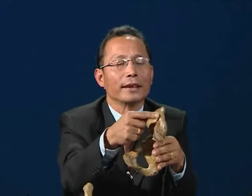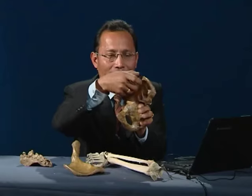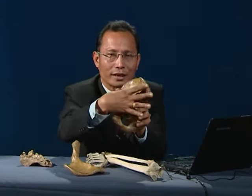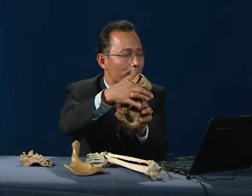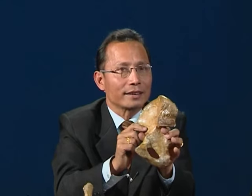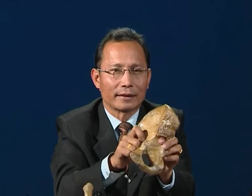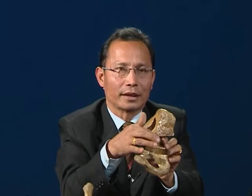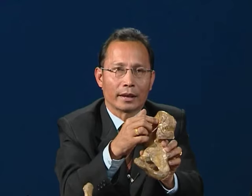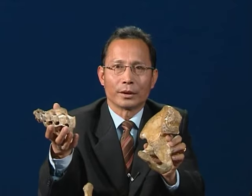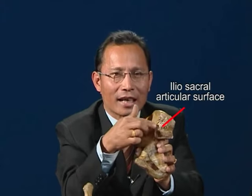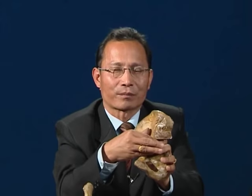With the assumption of erect posture, the ilium becomes broader and shorter — broader and shorter, and almost pan-shaped. Another change noted in the pelvis is that the articular surface between ilium and sacrum, called the iliosacral articular surface, broadens. Why? Because it needs to form a pelvic basin to support the internal viscera of the body.